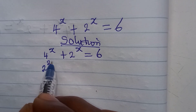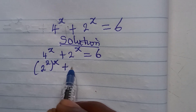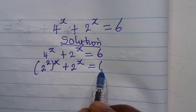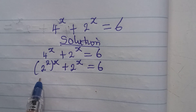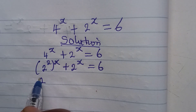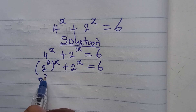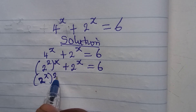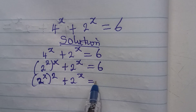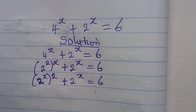We can write 4 as 2 to the power of 2, so we have 2 to the power of 2, then to the power of x, plus 2 to the power of x, equals 6. This simplifies because the x comes in and the square goes out, giving us 2 to the power of x, quantity squared.